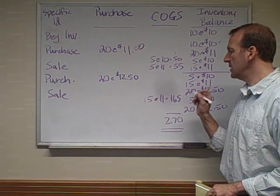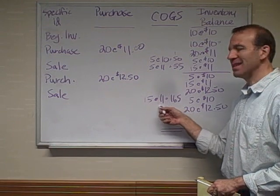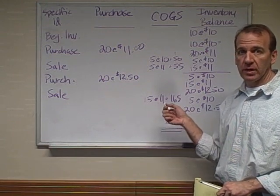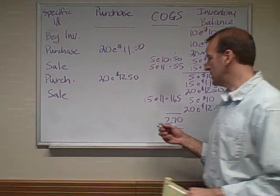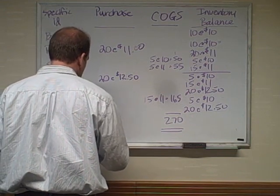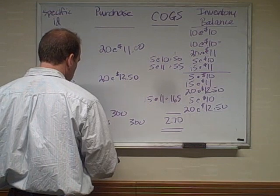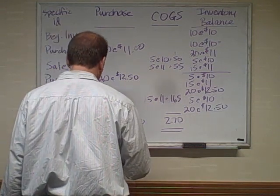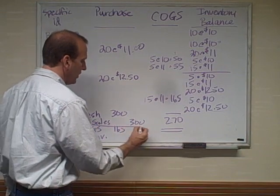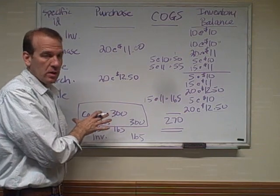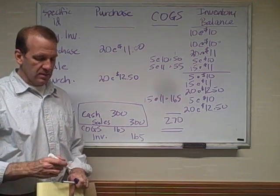I want to point out one more time that with these methods we're just looking at inventory and cost of goods sold — we're not looking at the sale itself. When we sold at $11, that was the cost of goods sold calculation and the reduction of inventory. We would have sold the basketballs for more than that — say $20 each. So we'd have cash of $300 and sales of $300 on one side, and then cost of goods sold of $165 and a reduction in inventory on the other. We haven't been dealing with that sales side at all in this chapter — what we're concentrating on is the cost of goods sold and inventory portion of the transaction.